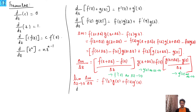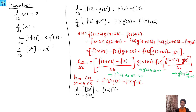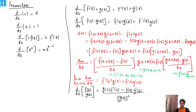For the quotient rule: d/dz[f(z)/g(z)], remembering the condition required to define quotient functions, this equals [g(z)·f′(z) − f(z)·g′(z)] / [g(z)]². This is the same result we had in the course on calculus of one real variable.